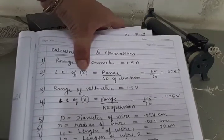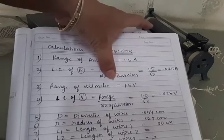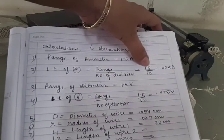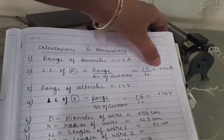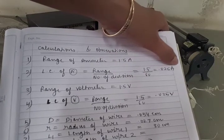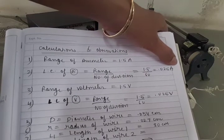Range of ammeter is 1.5. Then least count formula is range upon number of division. Range is 1.5, divisions are 60. So this way 0.025 ampere is the least count of ammeter.